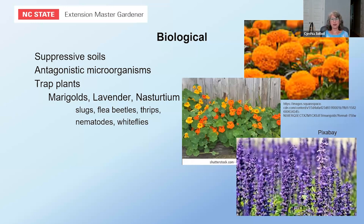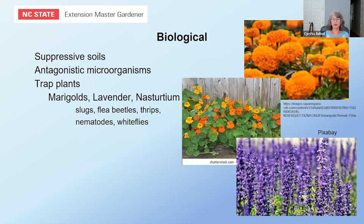Trap plants are another biological control. Marigolds, lavender, and nasturtium can act as trap plants to attract slugs, beetles, thrips, nematodes, and whiteflies. Marigolds also exude things into the soil that can inhibit soil fungi and nematodes. So they can serve as a biological control in multiple ways.